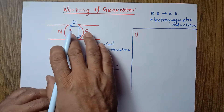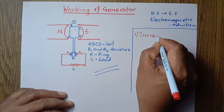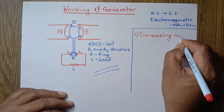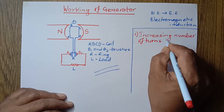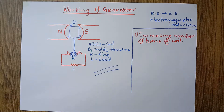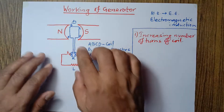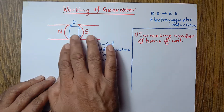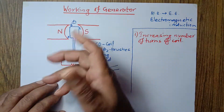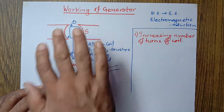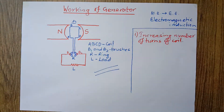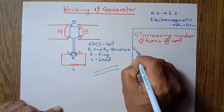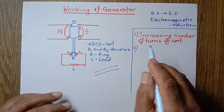The first method is increasing the number of turns of the coil. We can produce more and more electrical energy if the number of turns of the coil is increased. Instead of 100 turns, if we use 200 turns or 500 turns, then the amount of electrical energy produced by the generator will be more. That's why one method of increasing electrical energy by a generator is increasing the number of turns of the coil.